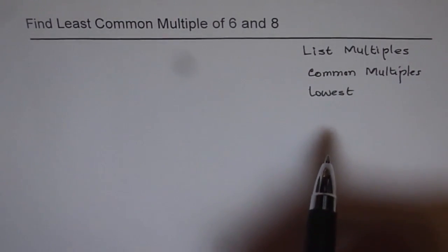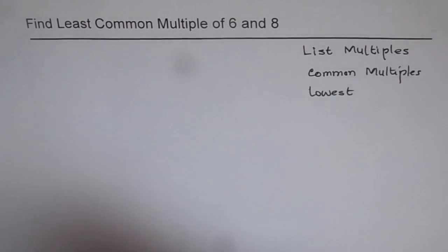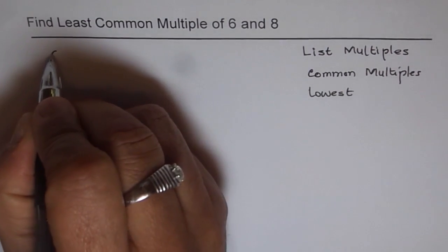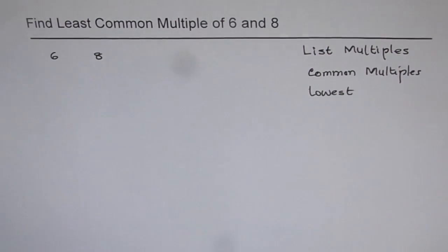So list all the multiples which you can and then find the common multiples and the lowest one will be the least common multiple. So we are given here two numbers, 6 and 8. So the numbers are 6 and 8.